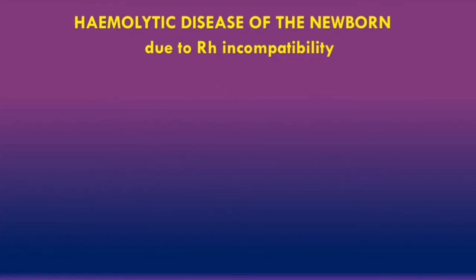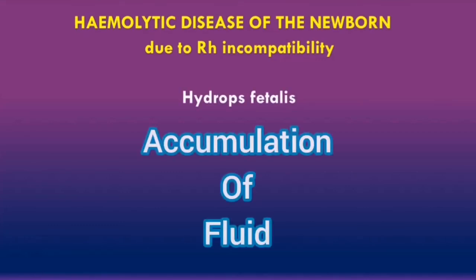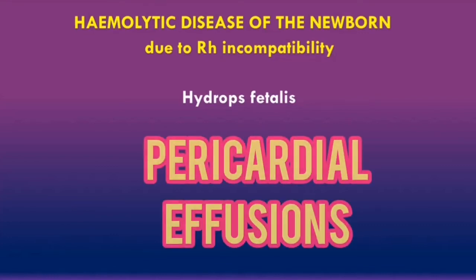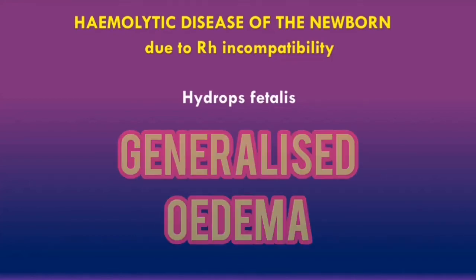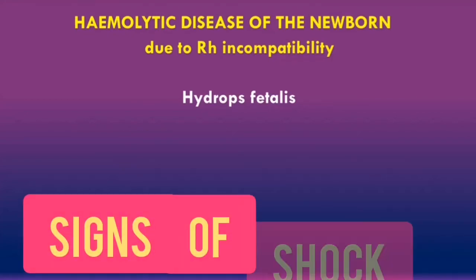In terms of clinical features of hemolytic disease of the newborn due to rhesus incompatibility, the most dangerous complication is hydrops fetalis. Hydrops fetalis is characterized by the accumulation of fluid into various compartments, leading to conditions such as pericardial effusions, pleural effusions, ascites, generalized edema, and there can also be signs of shock.